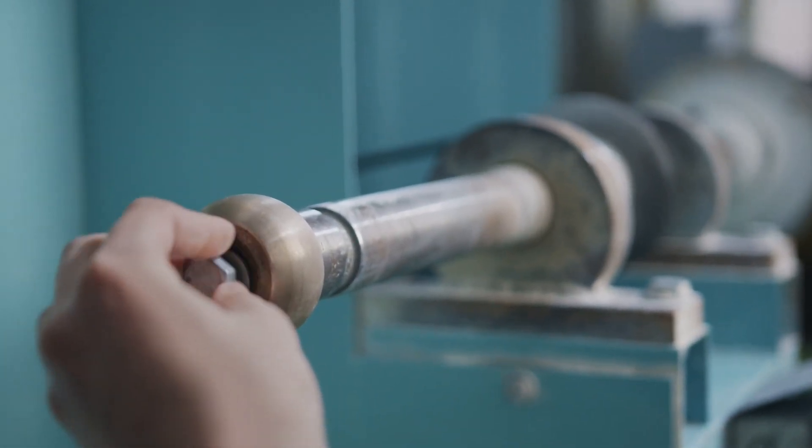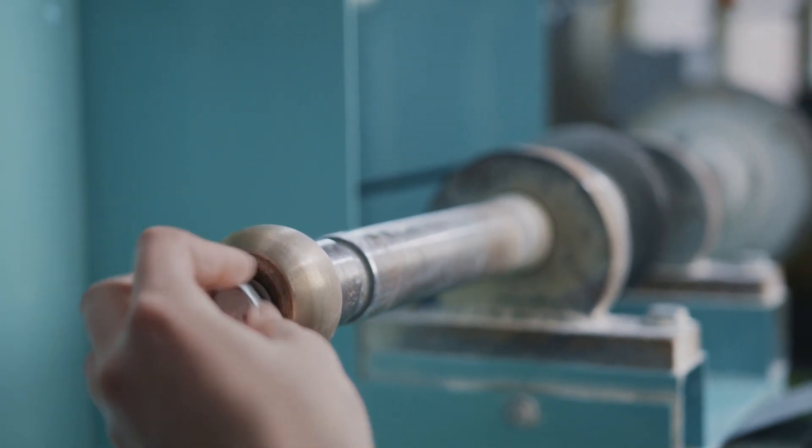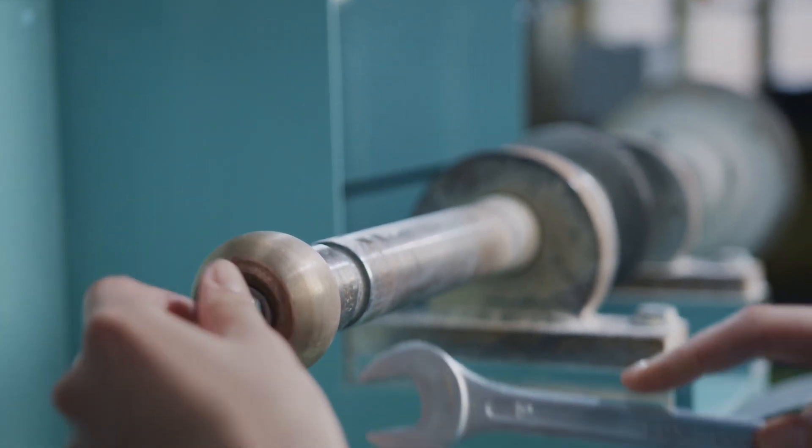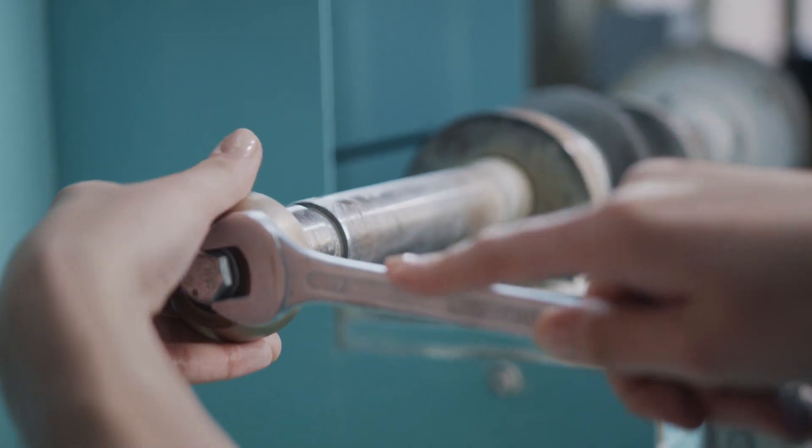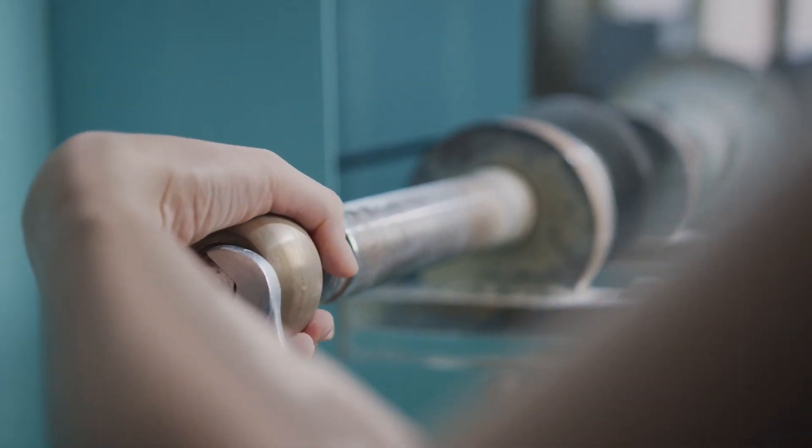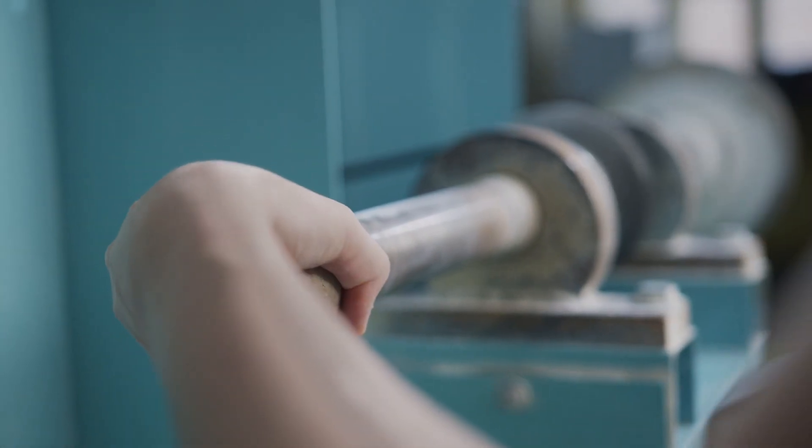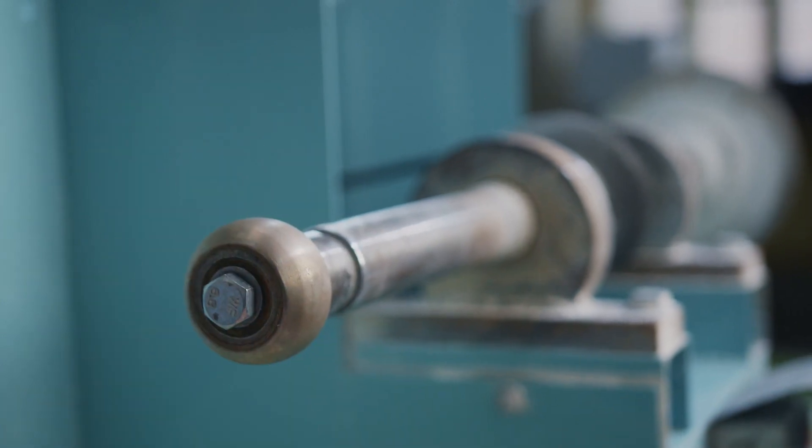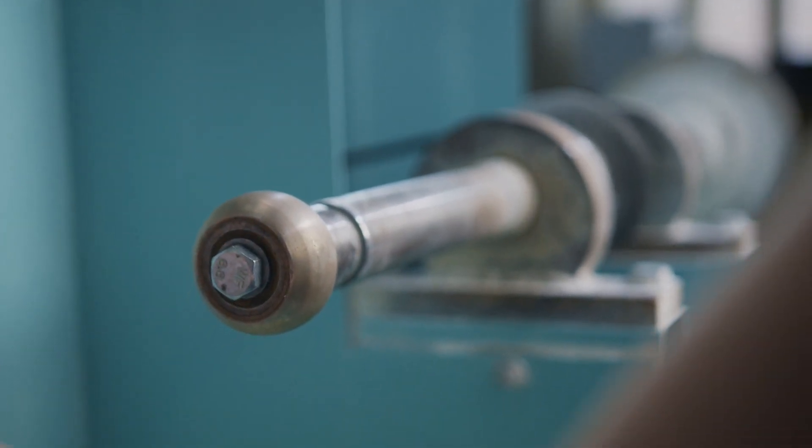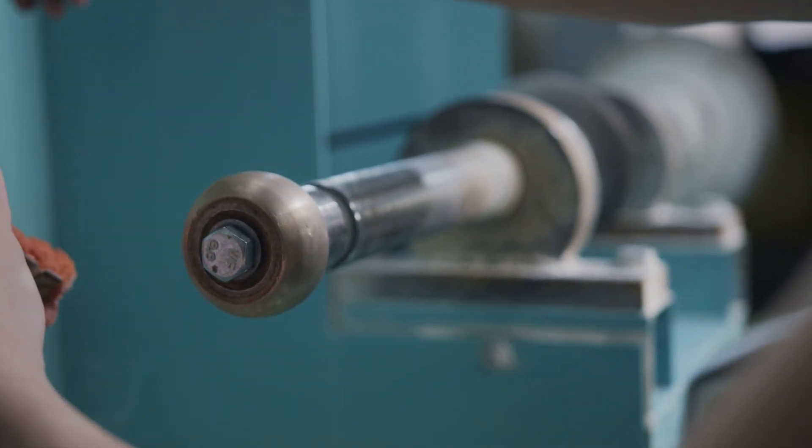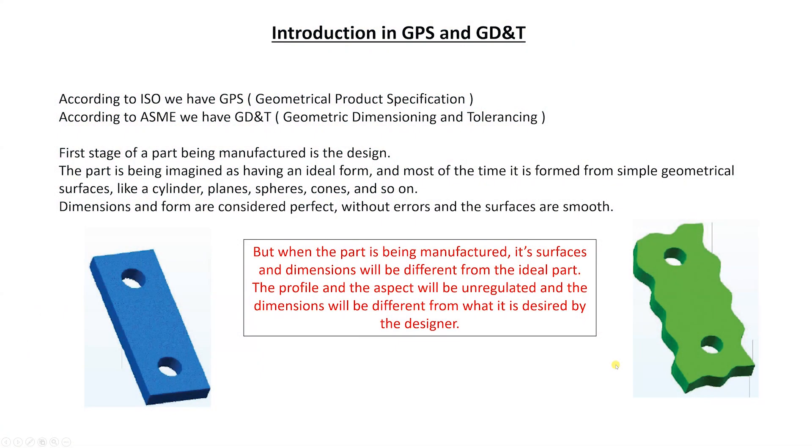But when the part is being manufactured, its surfaces and dimensions will be different from the ideal part. The profile and the aspect will be unregulated and the dimensions will be different from what is designed by the designer. So here we can see the example of the part being manufactured. Of course it's exaggerated, but this is the real deal guys.